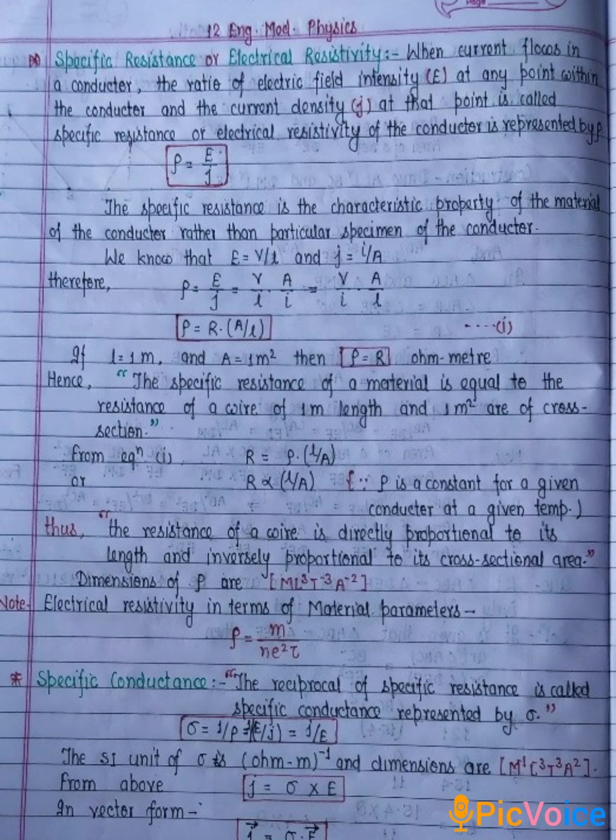From above, J is equal to sigma into E, where J is the current density, sigma is the specific conductance, and E is the electric field intensity. In vector form, we know that current density is a vector quantity and E is also a vector quantity. Therefore, vector J is equal to sigma vector E.